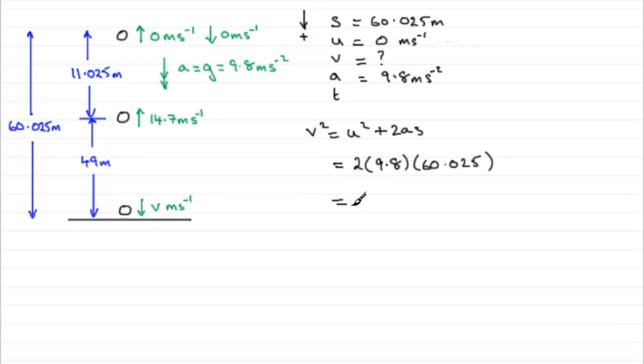So if we work this out, what we get is 1176.49. And to get V, we need to square root both sides. So V will equal the square root of 1176.49. And if you do that, it comes out to exactly 34.3 metres per second.